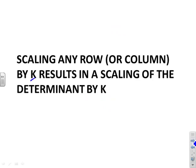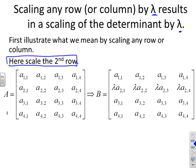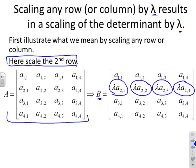First rule: scaling any row or column by some constant lambda results in a scaling of the determinant by the same constant lambda. To illustrate, scaling the second row means multiplying all coefficients on that row by lambda — the same multiplying factor is applied along that entire row. The same applies to a column.